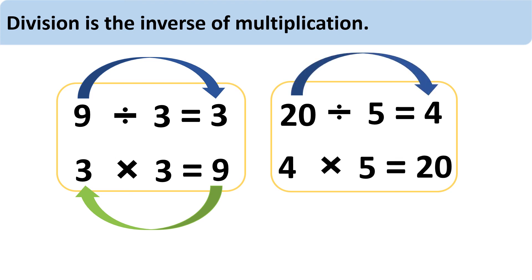Let's look at another example: 20 divided by 5 equals 4, and 4 multiplied by 5 equals 20. By dividing we are getting less, and by multiplying we are getting more.